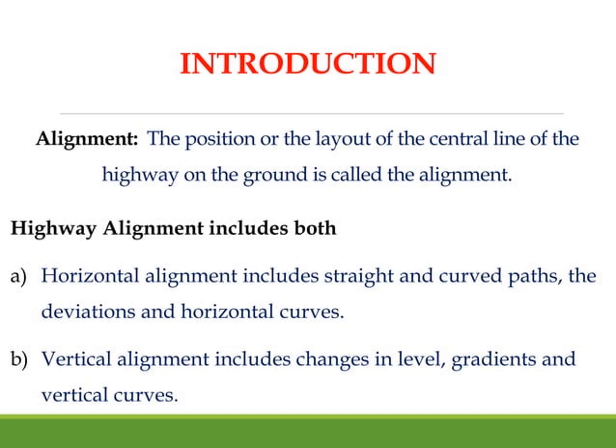Alignment means we fix the center line. Just as center line marking is done in a building, likewise in highway, the center line marking of the highway is called alignment. Highway alignment includes both straight and curved paths — deviations and horizontal curves. Vertical alignment includes changes in level, gradients, and vertical curves.